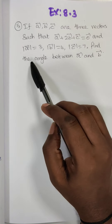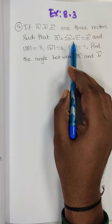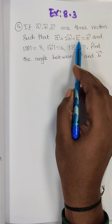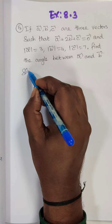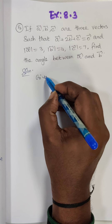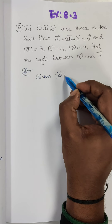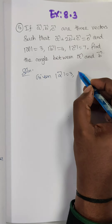So now the given condition is: A vector plus 2B vector plus C vector equal to 0. The given values are: modulus of A vector is equal to 3, modulus of B vector is equal to 4, modulus of C vector equal to 7. And the given condition: A vector plus 2B vector plus C vector equal to 0.